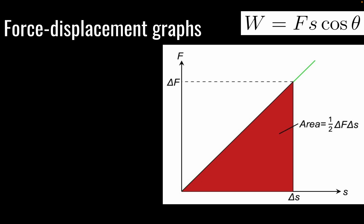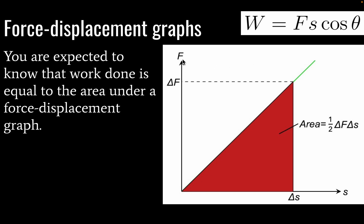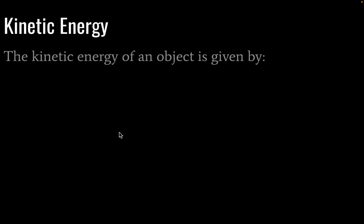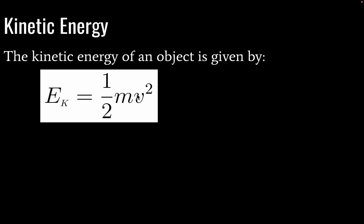Next we're going to look at force-displacement graphs. We have force on our y-axis and displacement on our x-axis. What we're looking at here in calculus terms would be called an integral. We have a linear relationship between force and displacement that is increasing. To calculate the area under this line — our integral — we need to calculate the area of a triangle: one-half base (change in displacement) times height (change in force). The kinetic energy of an object is given by one-half mass times velocity squared, and you should be familiar with this equation.